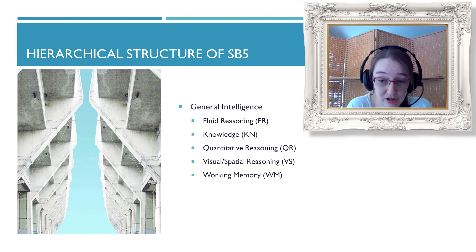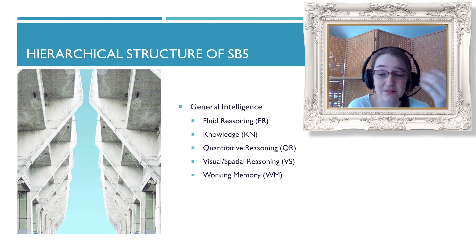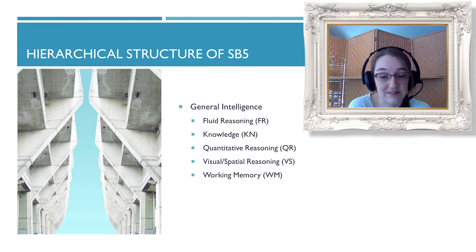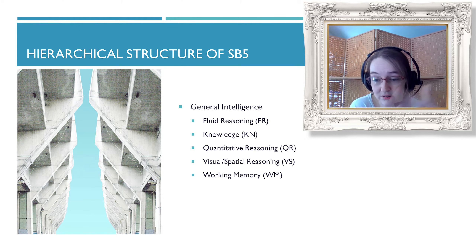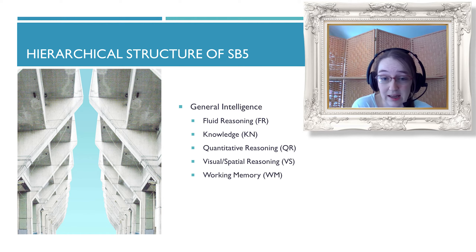Let's talk about the hierarchical structure. It's broken up into both verbal and nonverbal. As you can see in the slide — it looks like an octopus on its side to me — you've got general intelligence as overarching, then fluid reasoning with verbal and nonverbal sections, general knowledge with verbal and nonverbal, quantitative reasoning, visual-spatial reasoning, and working memory.